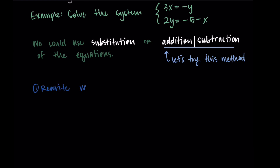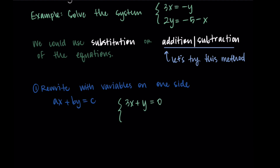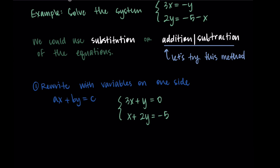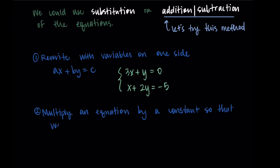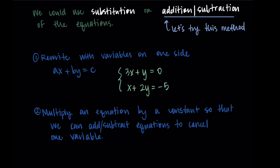The first step in the addition or subtraction method is to rewrite with the variables on one side — specifically in the form ax plus by equals c. Moving x and y terms to the left and constants to the right: the first equation becomes 3x plus y equals zero, and the second equation becomes x plus 2y equals negative 5.